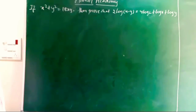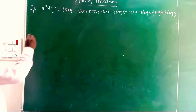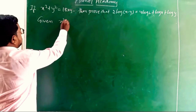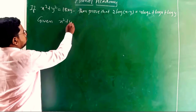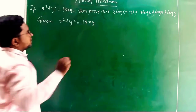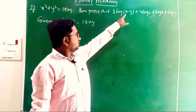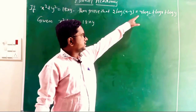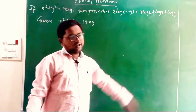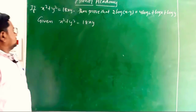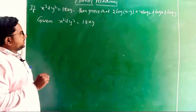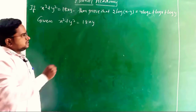Here, given that x² + y² = 18xy. From this we have to prove that 2 log(x − y) = 4 log 2 + log x + log y. We take x² + y² = 18xy as equation 1.